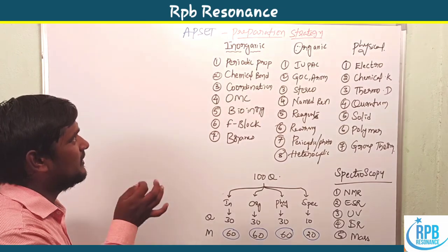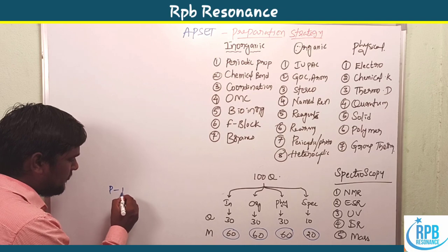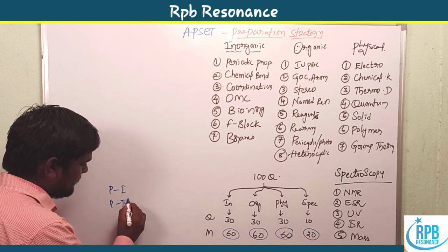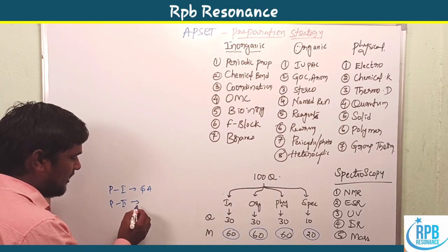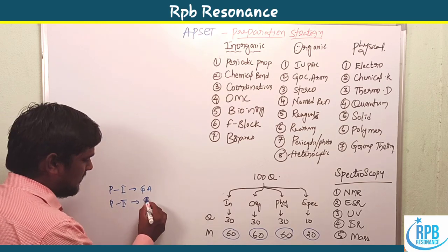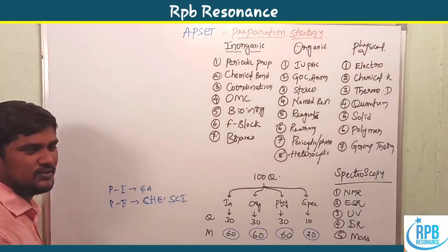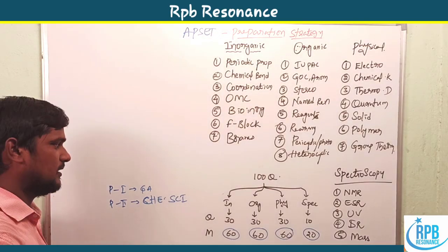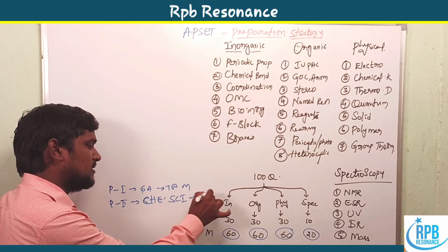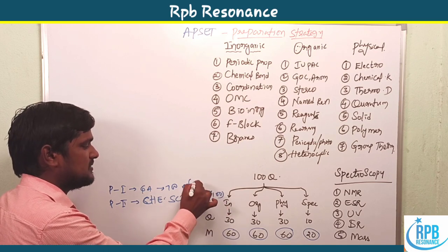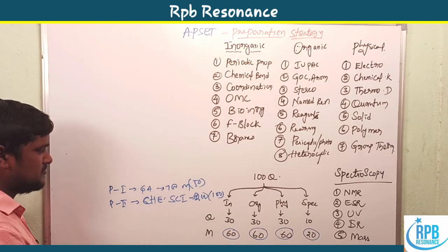EPICET has two papers: Paper 1 and Paper 2. Paper 1 covers all subjects — general aptitude and research aptitude — and is for 100 marks with 100 questions. Paper 2 is the chemical science exam for 200 marks with 50 questions. This is the paper pattern.